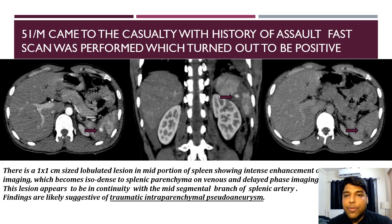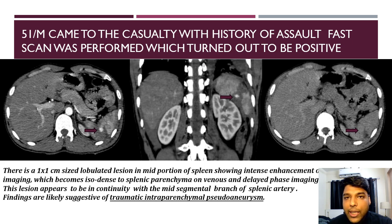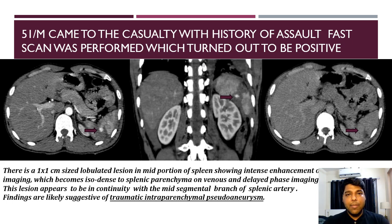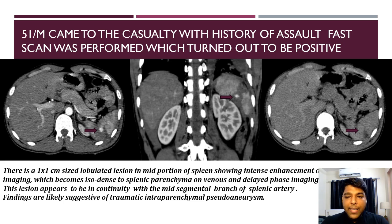Case 4: A 51-year-old male came to casualty with history of assault. FAST scan was performed which turned out to be positive. There is a 1x1 cm sized lobulated lesion in the mid portion of the spleen, showing intense enhancement on arterial phase imaging, which becomes isodense to splenic parenchyma on venous and delayed phase imaging. This lesion appears to be in continuity with the mid segmental branch of the splenic artery, findings likely suggestive of traumatic intra-parenchymal pseudoaneurysm.